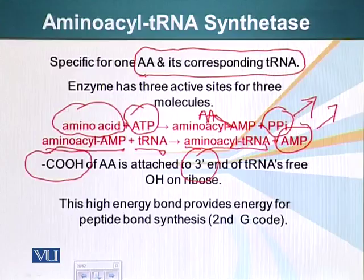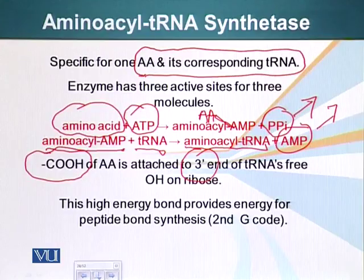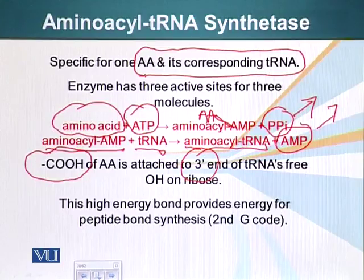This is a very high energy bond, as mentioned, and it supplies the energy for the synthesis of polypeptides or proteins. This mechanism is very, very well conserved because any mistakes made here would result in a major catastrophe for the organism. Correctly so, this is also referred to as the second genetic code. The first genetic code is the codon specifying a specific amino acid; the second genetic code is which specific tRNA binds to a specific amino acid.